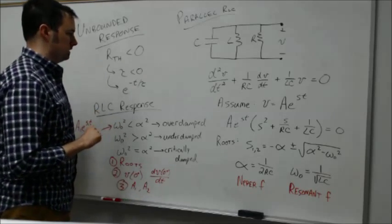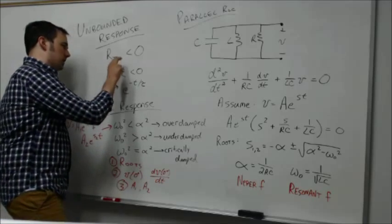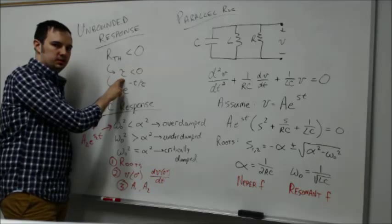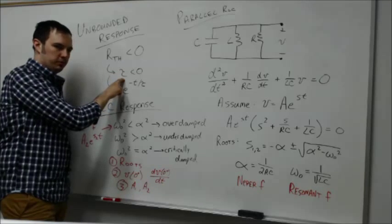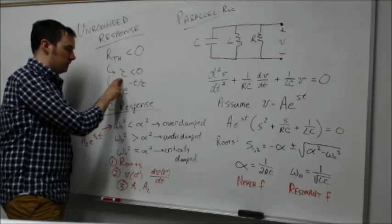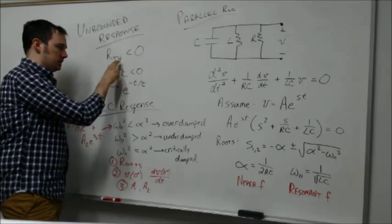What happens then if that's the case is that this tau, the time constant, is also going to be a negative quantity. Remember the RC time constant and the L over R time constant as well. So if R is negative, tau is going to be negative.